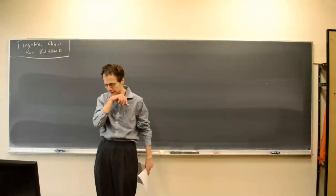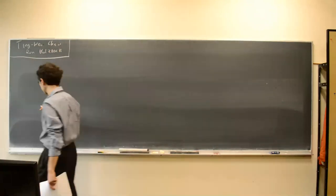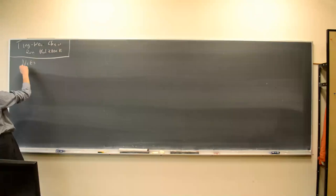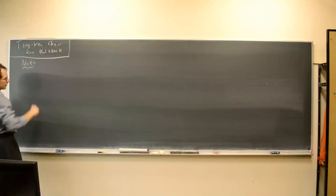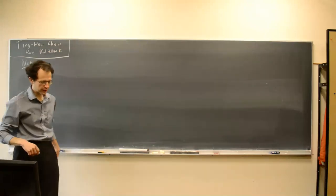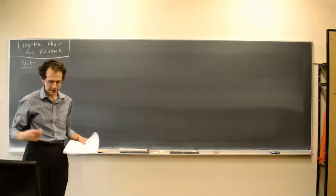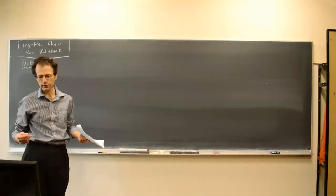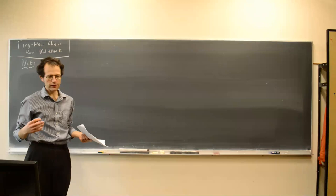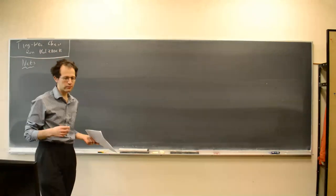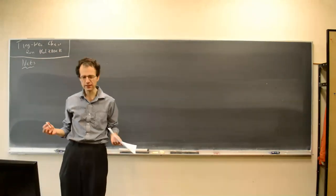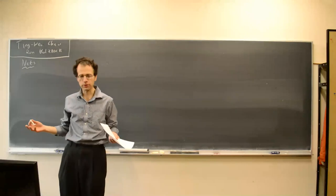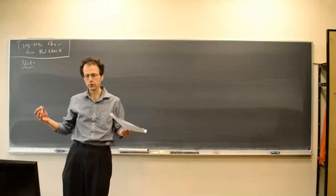I will start with something called nets. The word 'nets' means a variety of different things in mathematics. The kind of nets I will talk about originated in American analysis — now probably closer to what we would call discrepancy theory.